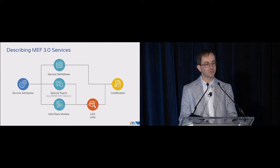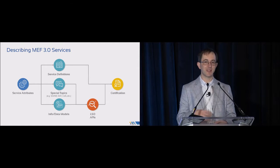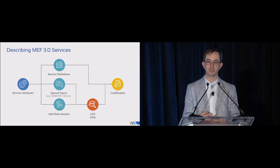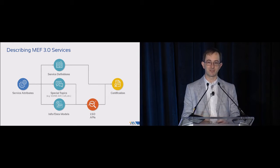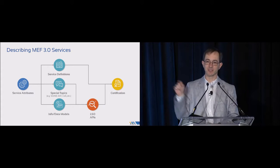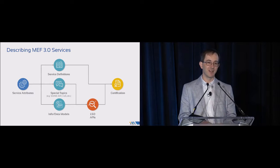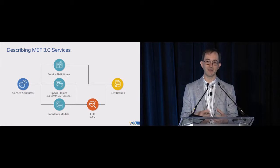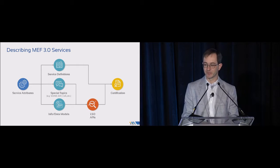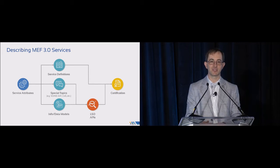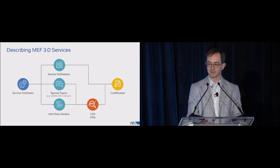How do we go about doing that? We start by describing service attributes — the aspects of the service that need to be agreed when you want to buy a service. When we say 'agree,' we don't constrain how that happens: it could be clicking a button, signing a document, or sitting in a room and negotiating. Once we have the service attributes, we use those to define particular services — for carrier Ethernet, things like EPL and EP-LAN fall out from this.